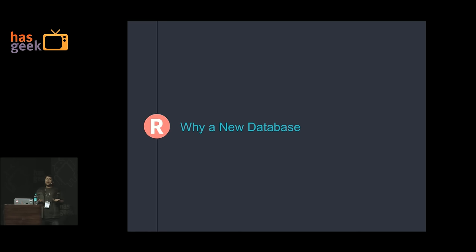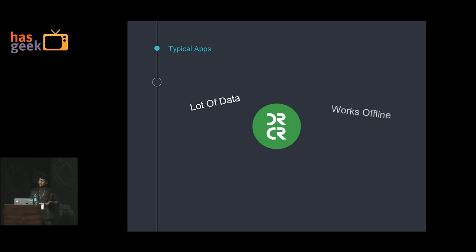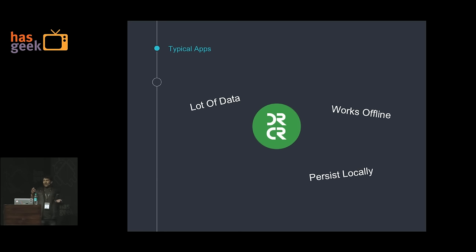So why do we need a new database altogether? Let us talk about a typical app scenario. You have an app, the app will have lots of data, and you want that data to persist so your app can work offline. The only way you can think of for now is SQLite, which means lots of tables.